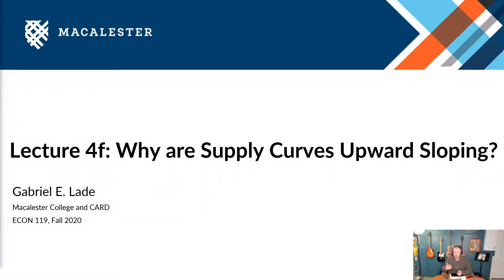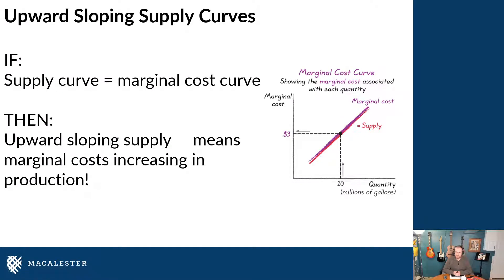We just talked about the economic logic underlying the description of an individual supply curve for a firm as also being its marginal cost curve. But a natural question then is why are supply curves upward sloping? In order to talk about that, we first have to rely on this logic. Remember that we define supply curves as equal to the marginal cost curve. So if supply curves are upward sloping, then we must be assuming that marginal costs are increasing as you produce more and more of a good.